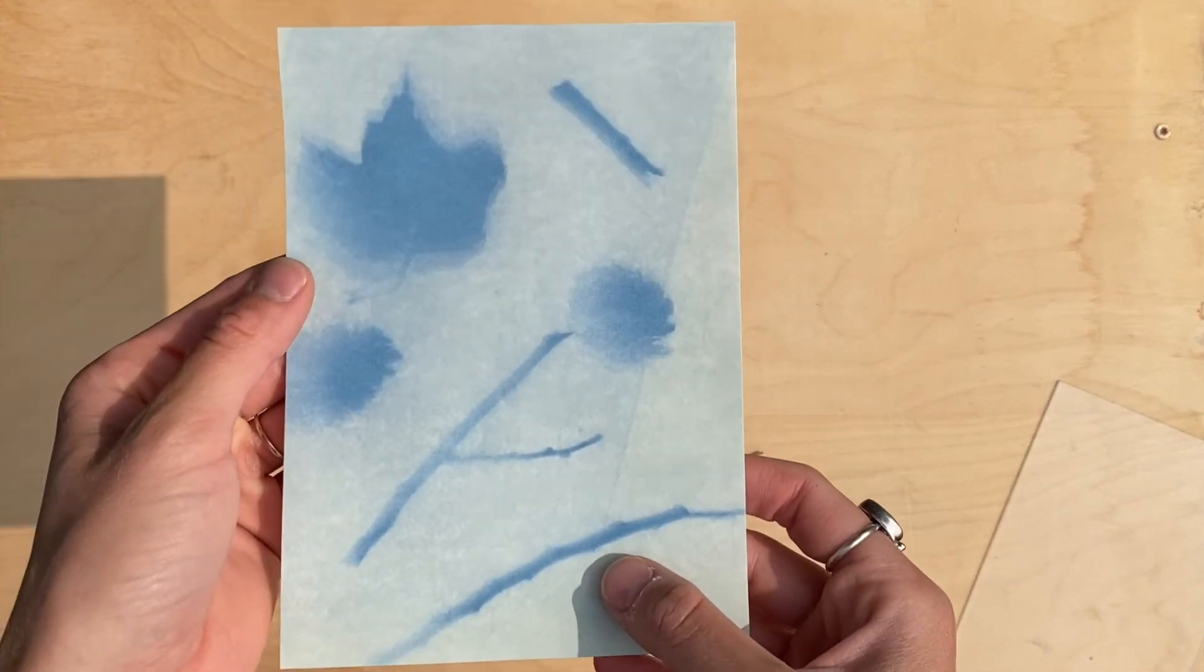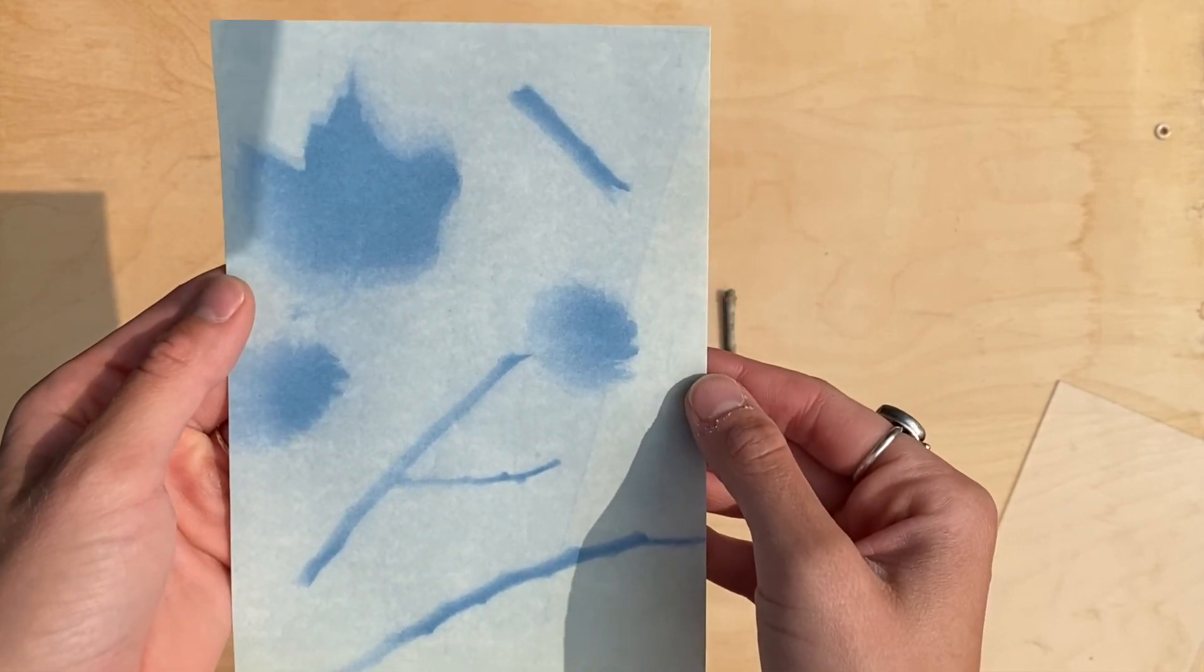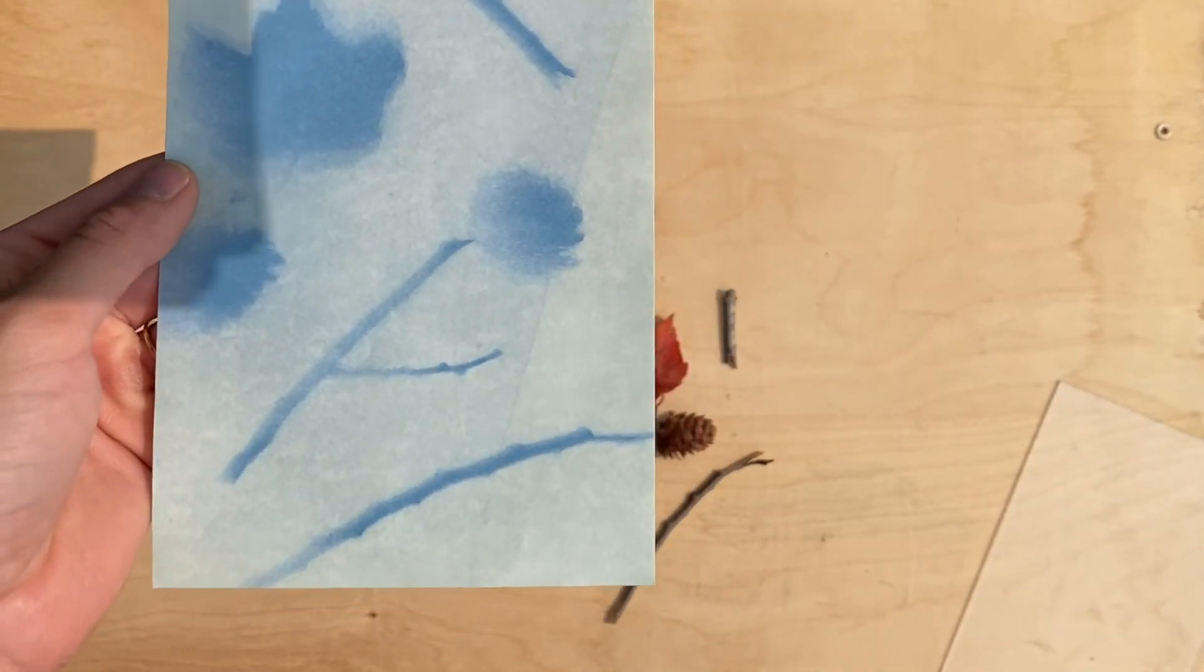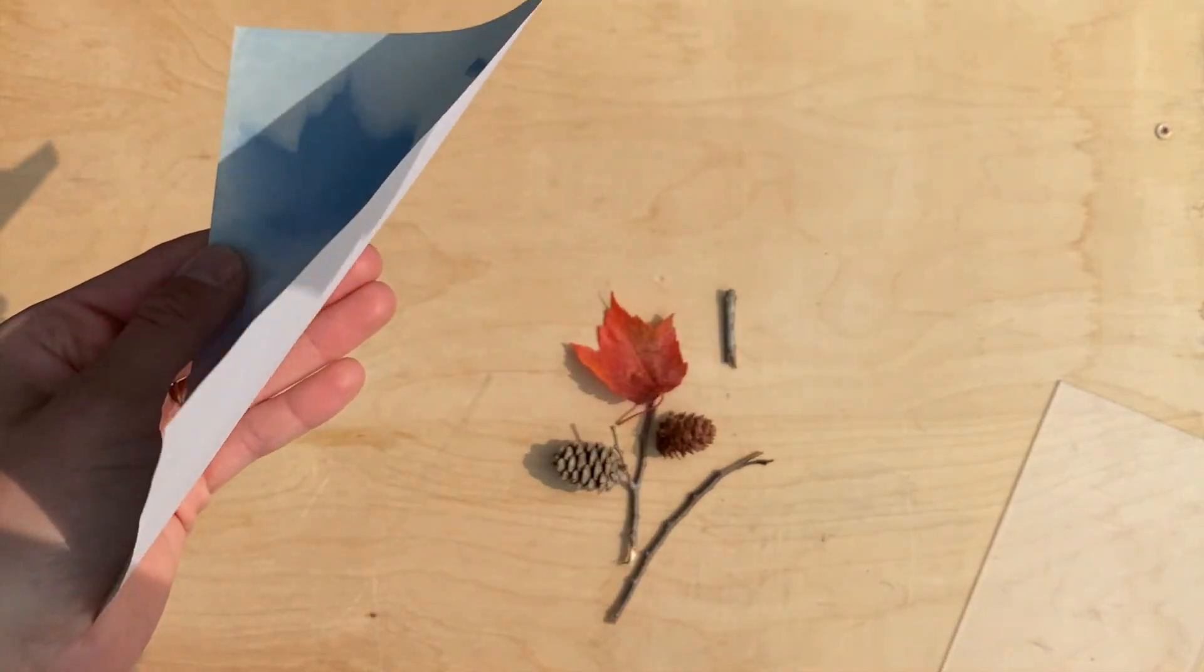We can see that the sun has left behind the imprint of our items. So now we're going to take this inside and soak it in water.